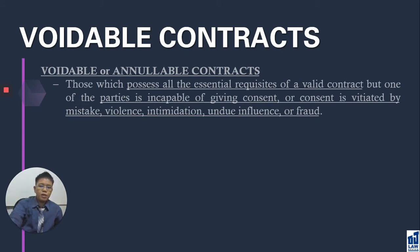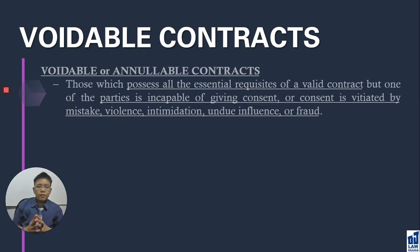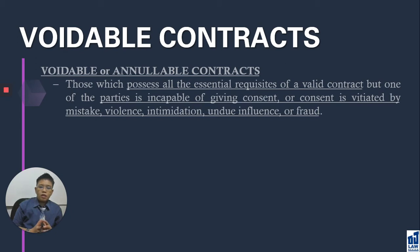Why is it defective? Because it may be one of two things. Number one, one of the parties is incapable of giving consent to the contract. Or it can be another reason: consent on the part of one of the contracting parties is vitiated by mistake, violence, intimidation, undue influence, or fraud.